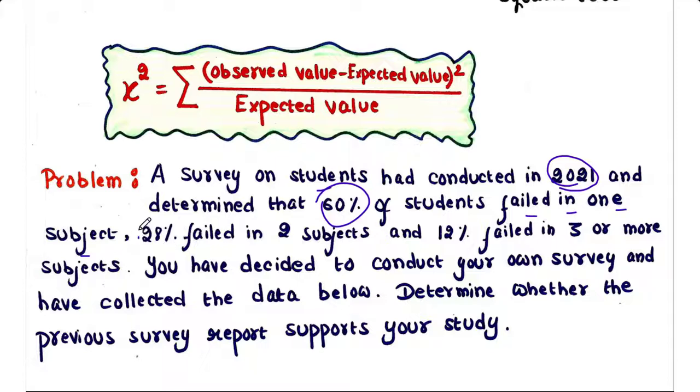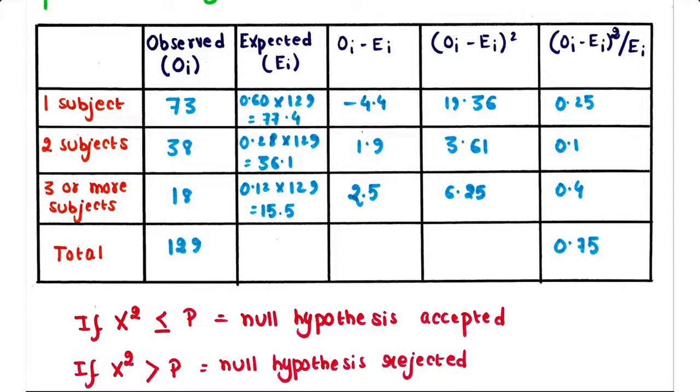Now you are not convinced by this data, so you have decided to conduct your own survey and you have collected the data. According to your data, 73 students failed in one subject, 38 students failed in two subjects, and 18 students failed in three or more subjects.